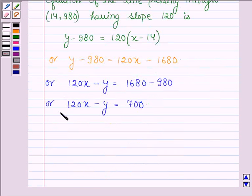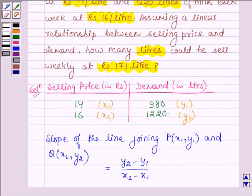So this is the equation of the line passing through the points P and Q. Now the question further says how many liters could he sell weekly at Rs. 17 per liter? So when the selling price is 17 we have to find the demand.